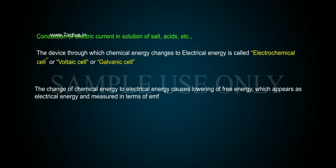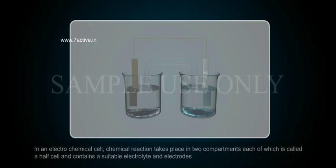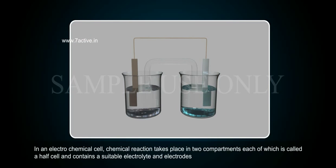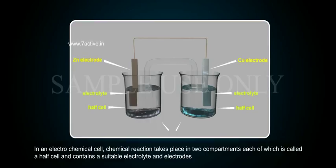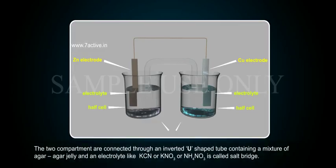The change of chemical energy to electrical energy causes lowering of free energy, which appears as electrical energy and is measured in terms of EMF — electromotive force. In an electrochemical cell, chemical reaction takes place in two compartments, each of which is called a half cell and contains a suitable electrolyte and electrodes.